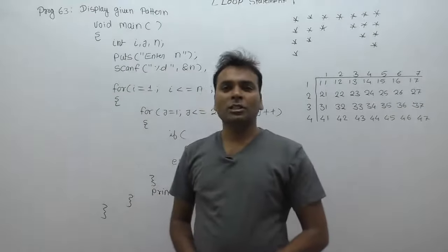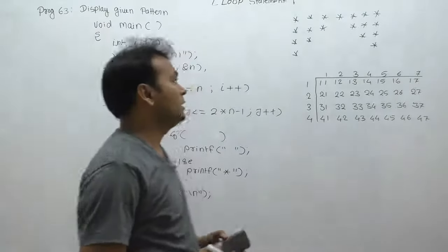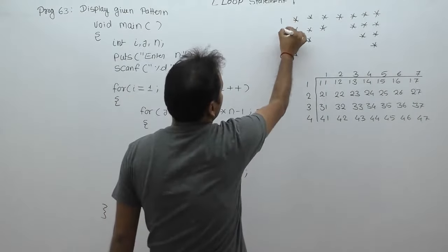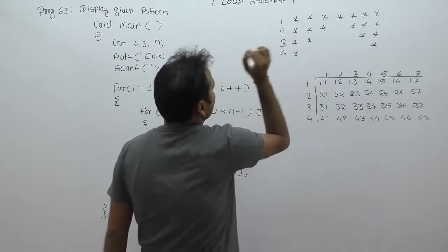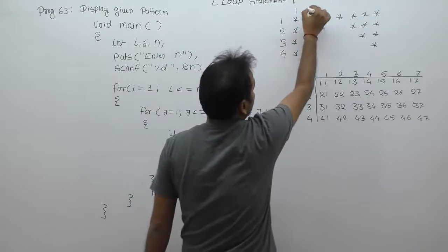Next program: how to display a given pattern using for loops. In this case, there are four rows available - one, two, three, and four. Number of columns: there are seven columns.